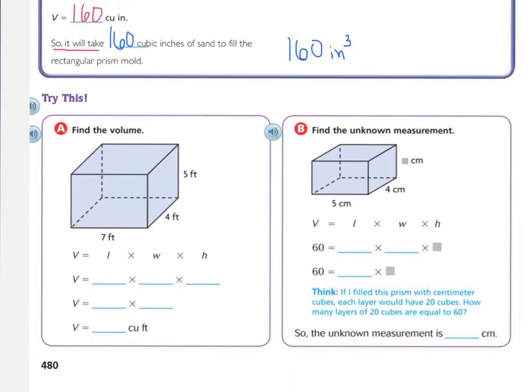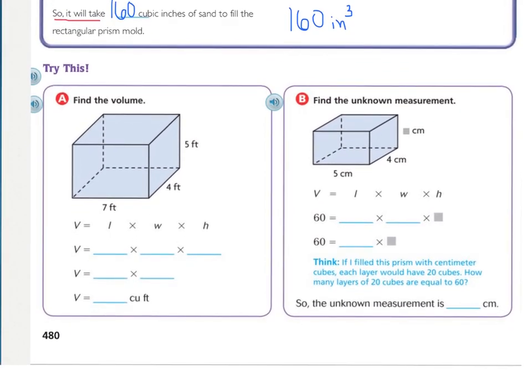So let's look at our try this now. The first one, A, is find the formula, so you're using the, or find the volume, and you're using the formula length times width times height. Fill it in and find the volume. Do part A. So using the formula, you should have had 7 times 4 times 5 equaling 140 cubic feet, which they give that to you, but you can also write it as 140 feet cubed with the exponent 3.